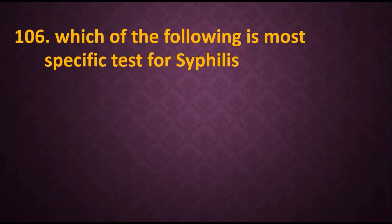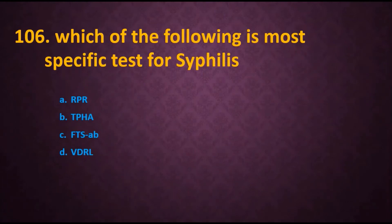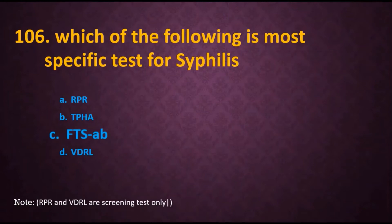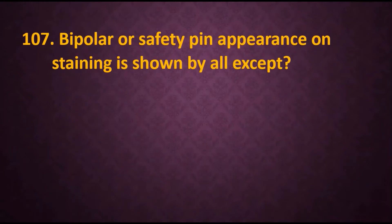Question 106: Which of the following is the most specific test for syphilis? Options are: A) RPR, B) TPHA, C) FTA antibody, D) VDRL. The answer is FTA — fluorescent treponemal antibody detection — which is the most specific test for syphilis, whereas RPR and VDRL are used as screening tests only.